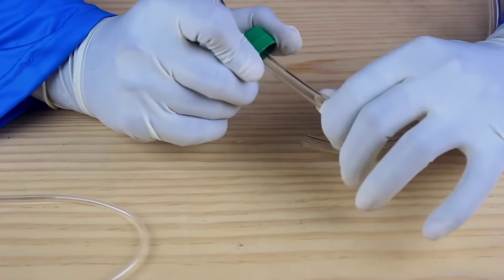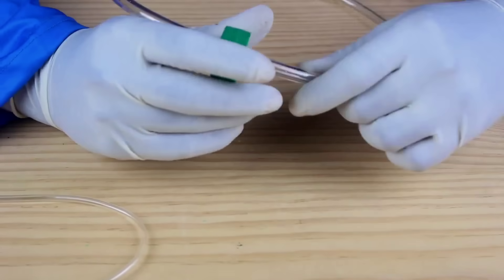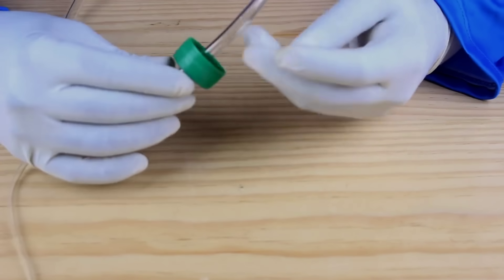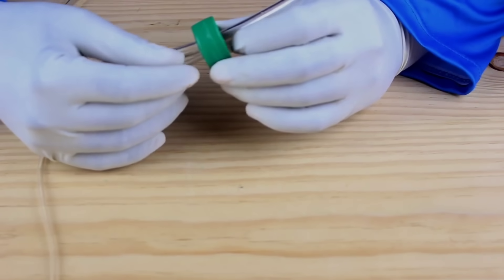Once the holes were drilled, I inserted both pipes into the cap and then sealed them firmly using a strong adhesive or glue. This ensures that the pipes stay in place and there's no chance of leakage when the dispenser is in use.